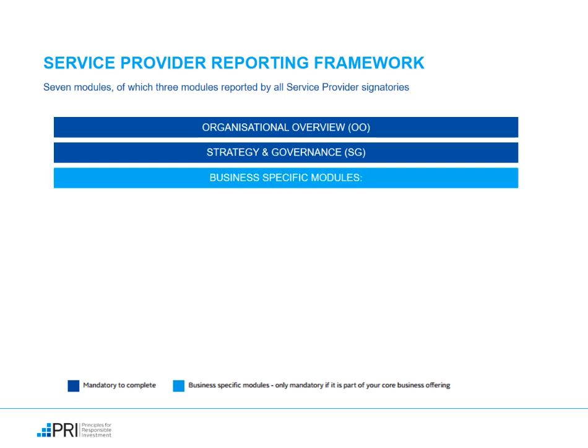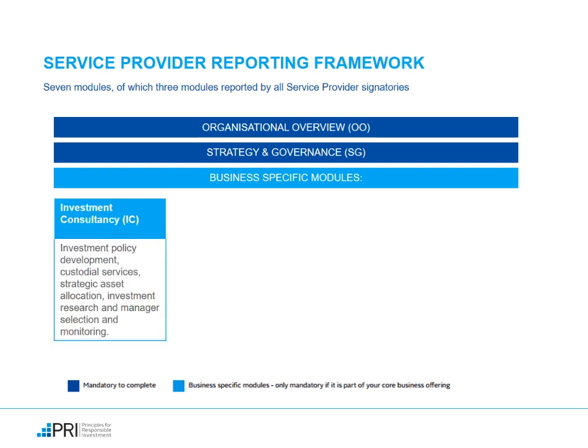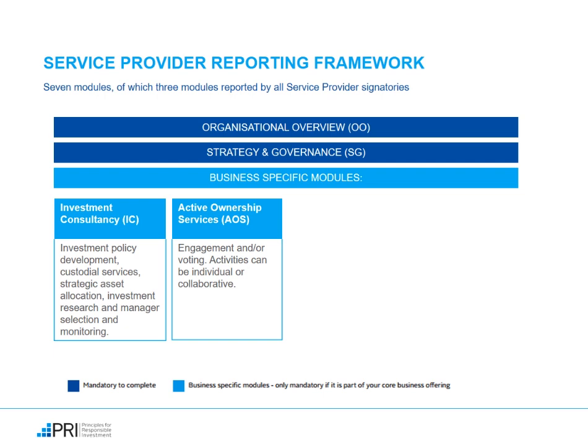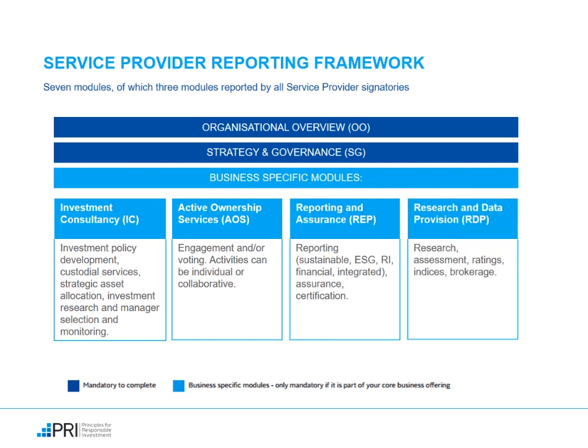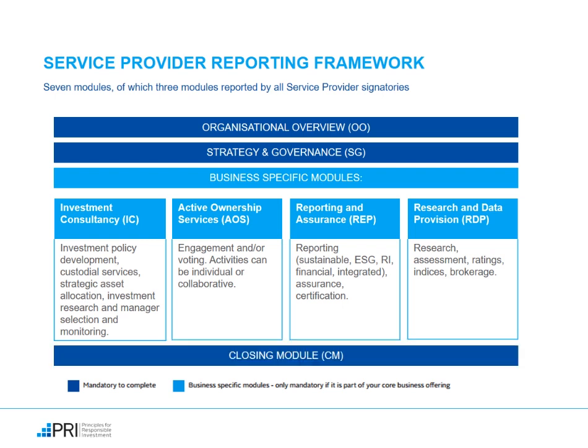Based on your responses in the Organizational Overview Module, your business-specific modules will unlock. This includes business activities such as investment consultancy, active ownership services, reporting and assurance, and research and data provision. You will only see modules which are applicable to you. If you do not identify any of the business-specific modules, you will only be required to complete the Organizational Overview, Strategy and Governance, and Closing Module. The last module that you will complete is a Closing Module, where you can report on how you have verified the responses in your report, give feedback to the PRI, and review your submission one last time.